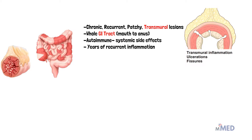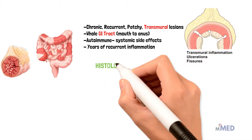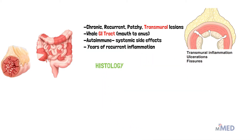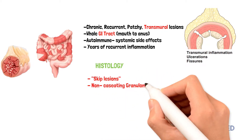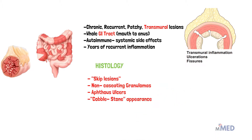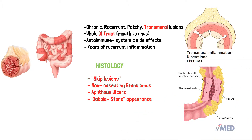Upon histological observation, we can see multiple separate areas of the disease which are called skip lesions. We can also see non-caseating granulomas, and we can see aphthous ulcers in the mouth and esophagus. The linear deep ulcers which connect often give the bowel a cobblestone appearance, which is a characteristic feature of Crohn's disease.